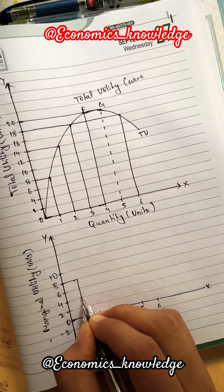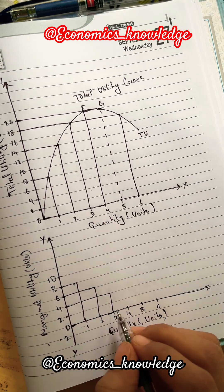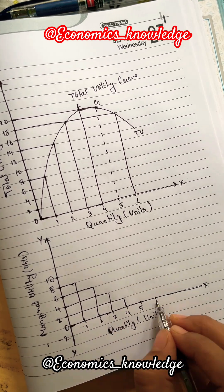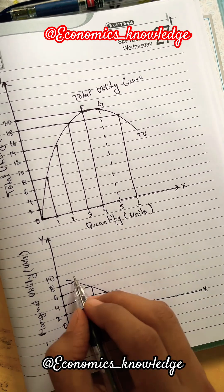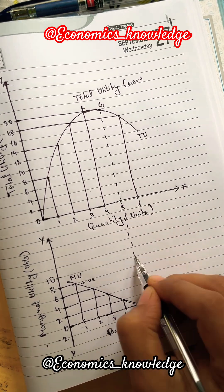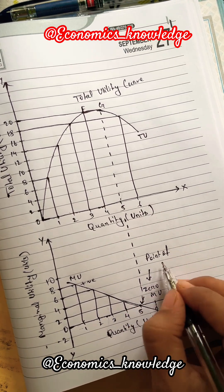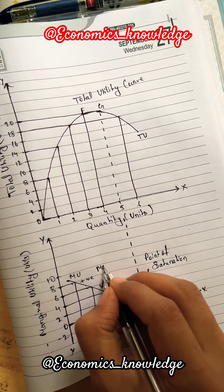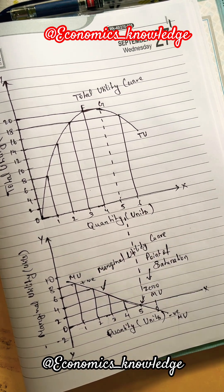Now, to draw the marginal utility curve, we will put the combination of marginal utility and quantity. By joining all the points together, we get the positive, 0, and negative marginal utility. This is the point of saturation where the consumer is satisfied from consuming a commodity and this is the marginal utility curve.